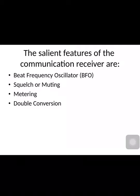The third salient feature is metering and the fourth is double conversion. This double conversion we have already seen in the detailed working of the communication receiver in the previous lecture, but we will see it again. In the exam, you can be asked to enlist the salient features of the communication receiver and explain any one — such as beat frequency oscillator, squelch circuit, muting, metering, or double conversion.